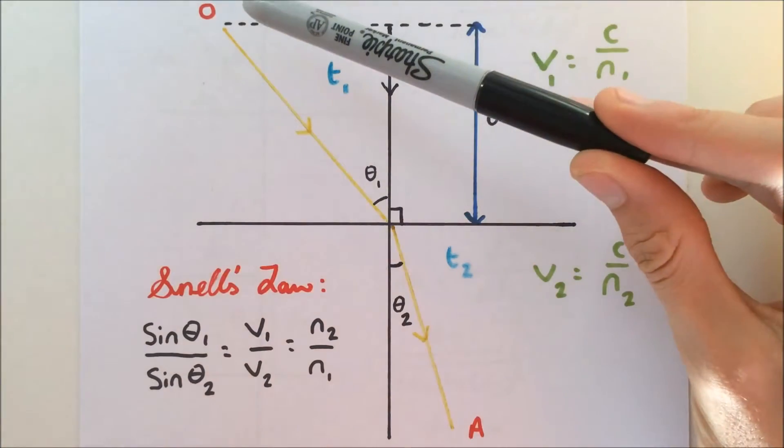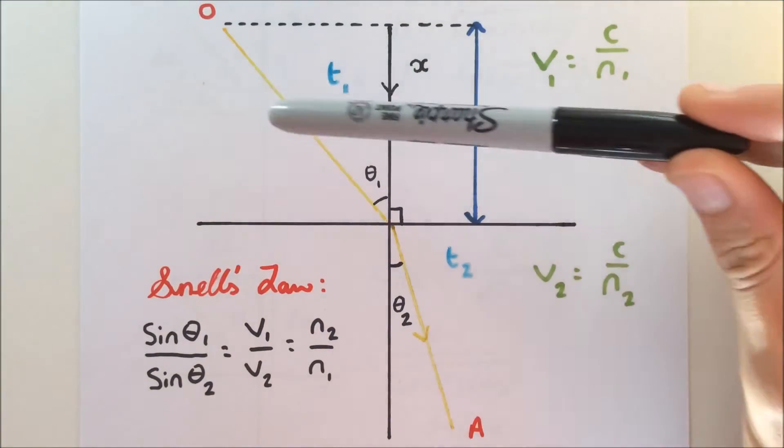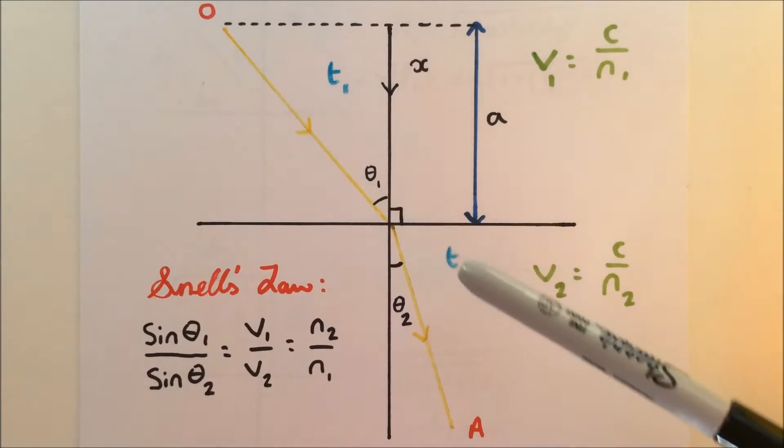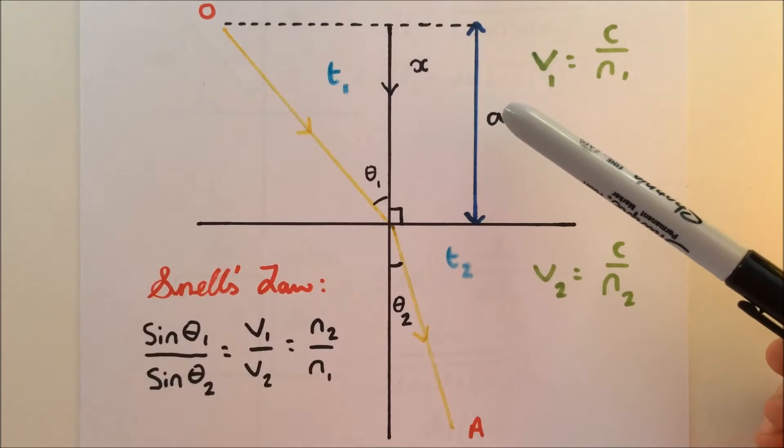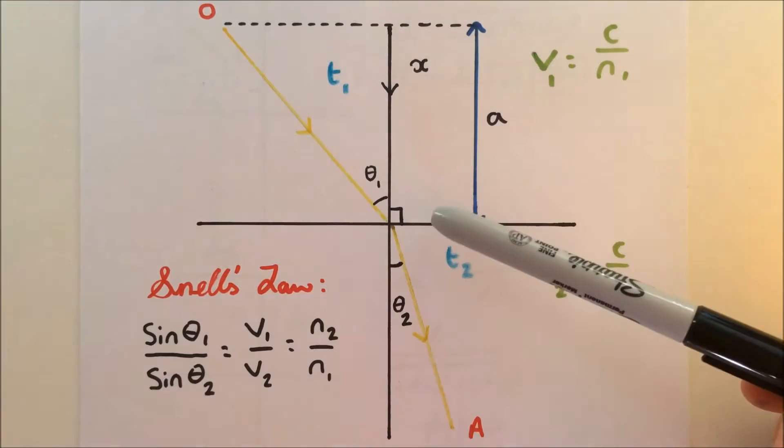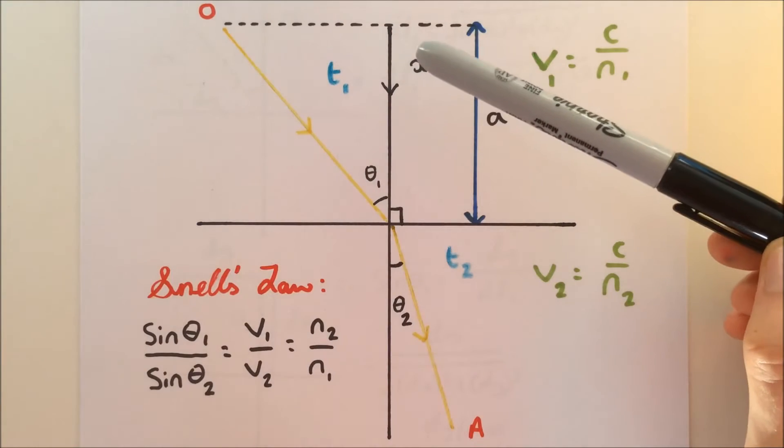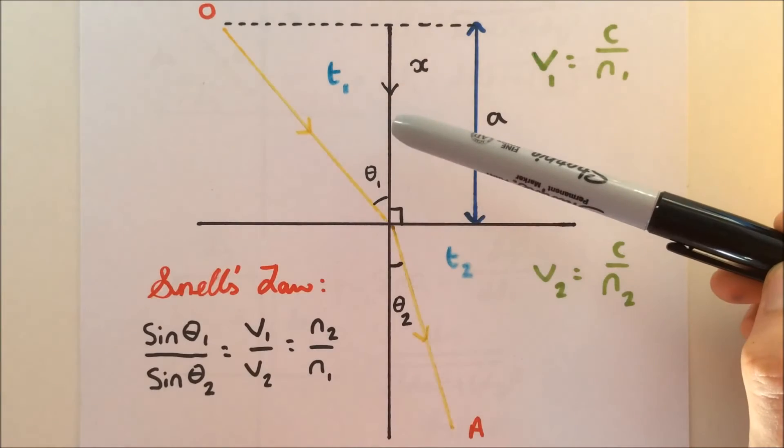So basically O is the point or the source of light. Here we have our boundary and then A is the end point. So lowercase a is simply the distance from O to the boundary, and X is the X axis. It varies—it can increase or it can decrease.